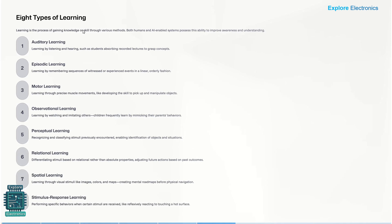The second core concept of intelligence is learning, and there are different types. Auditory learning: learning by hearing and listening to someone, such as students observing recorded lectures and grasping concepts. Then episodic learning: learning by remembering sequences of witnessed or experienced events in a linear or orderly fashion. As we gain experience, we have seen many things and many people — those are episodes we have learned from.